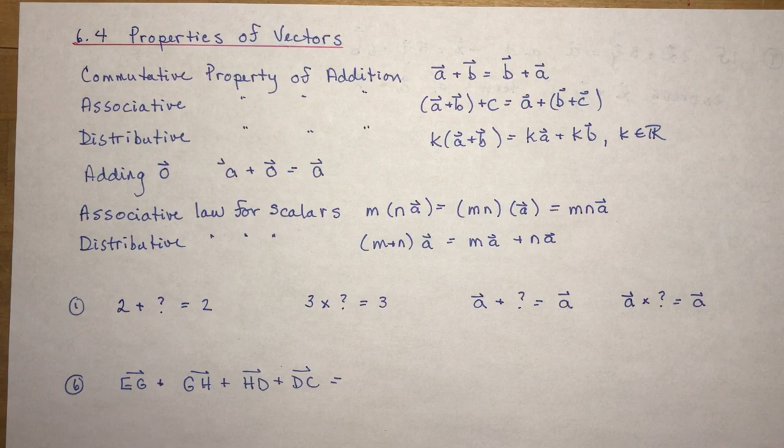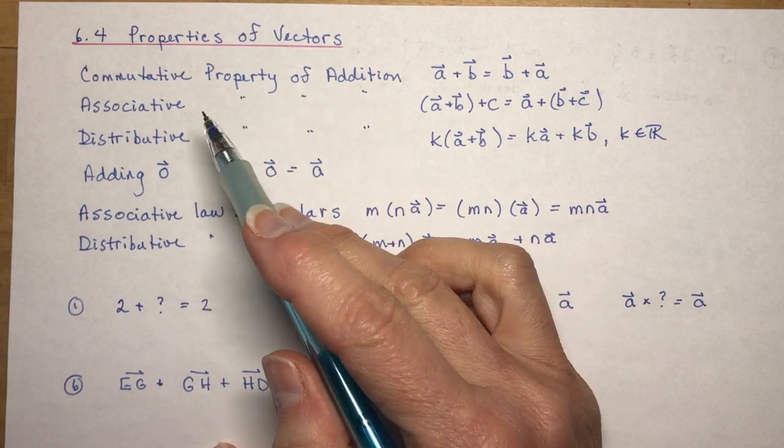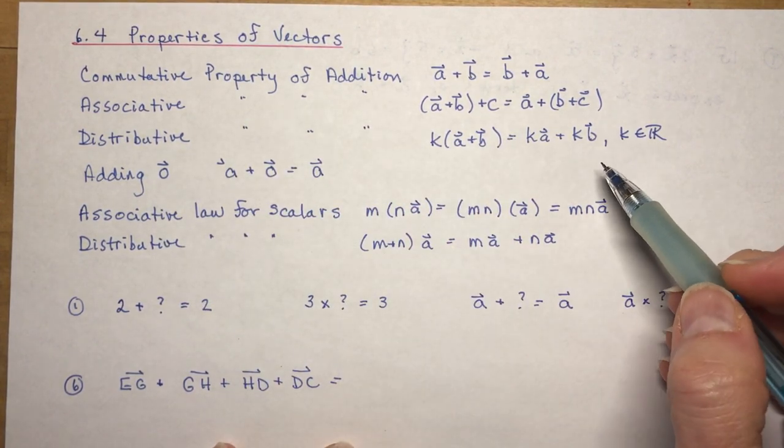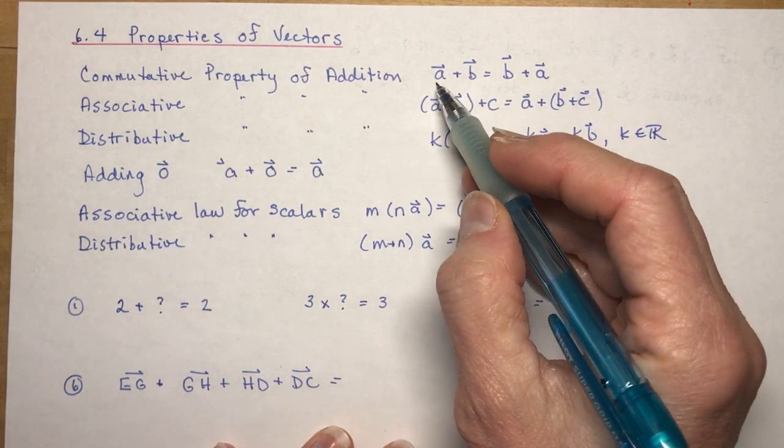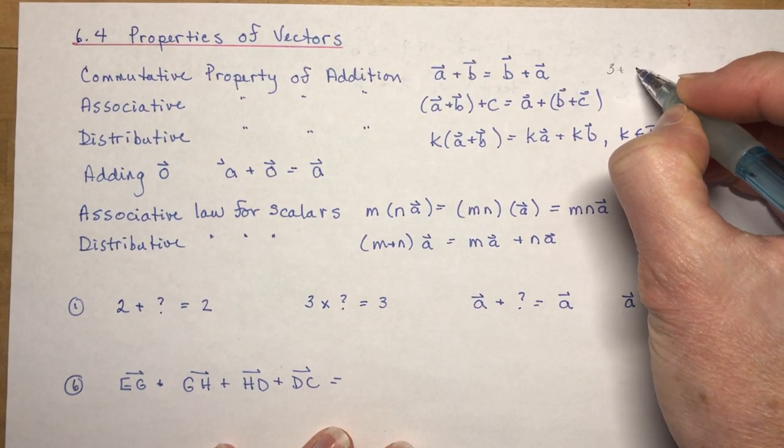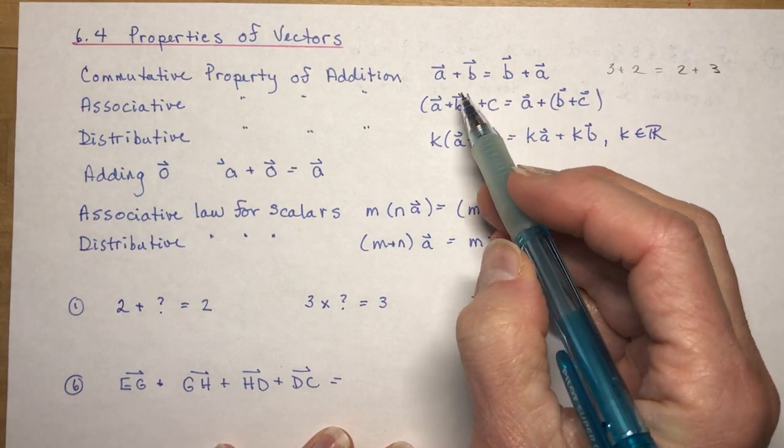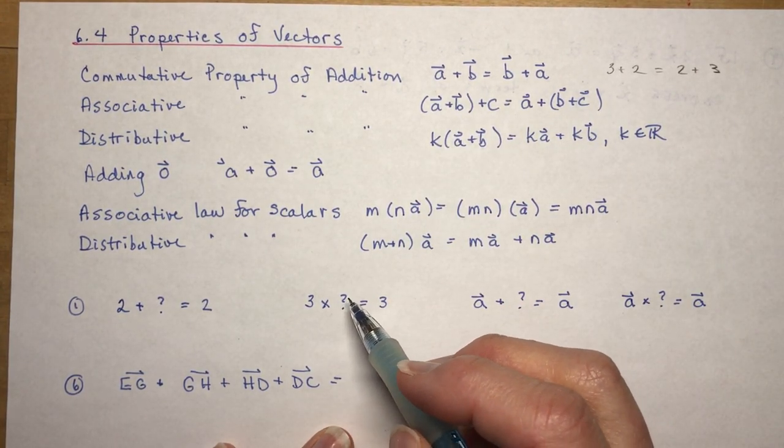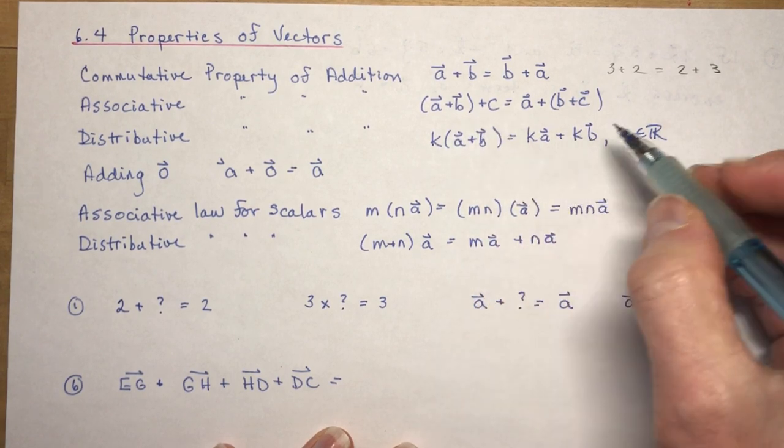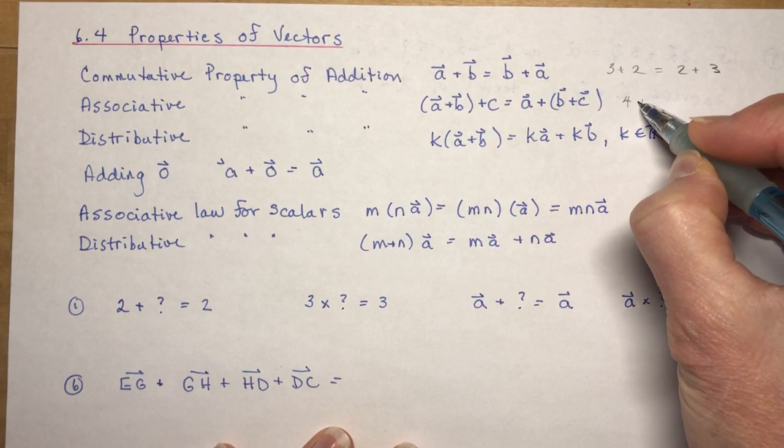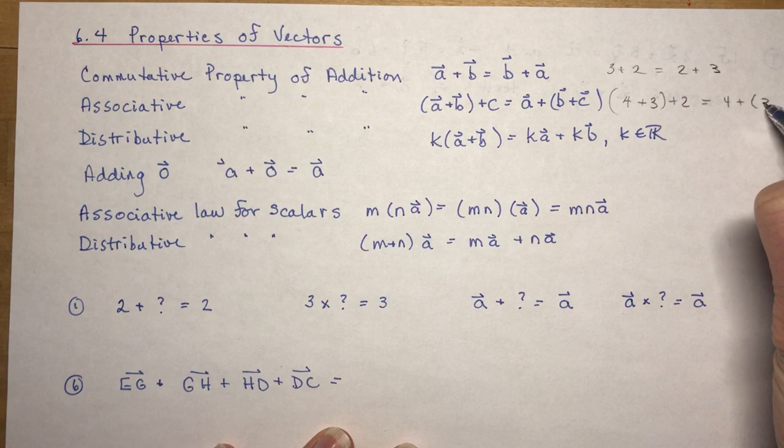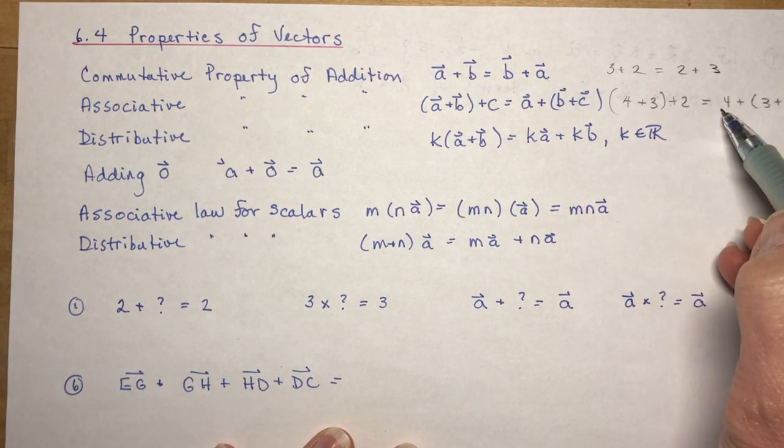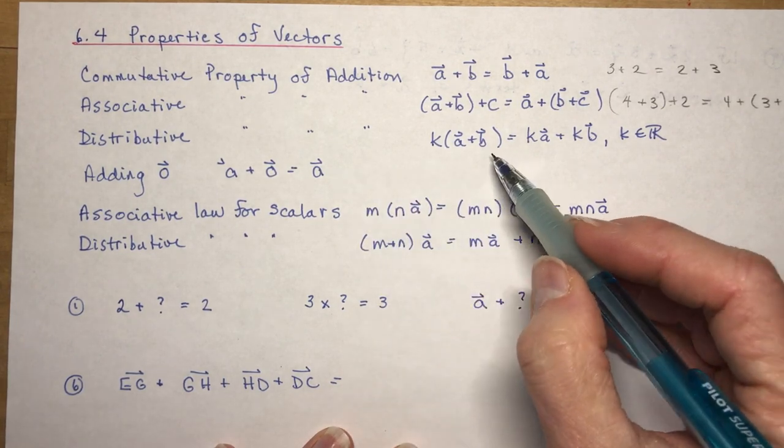Basically the commutative property of addition, associative, and distributive - these are all basic addition properties you know intuitively. If I had 3 plus 2, that's the same as 2 plus 3. The same holds true for addition of vectors. If I had a plus b and then added c, like 4 plus 3 then added 2, that's the same as taking 4 and adding 3 plus 2. You get 9 no matter which way you do it. Distributive property, same thing again.